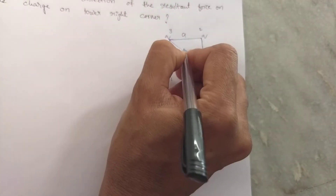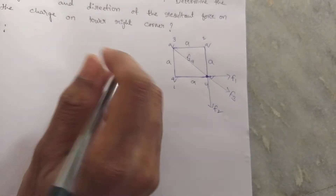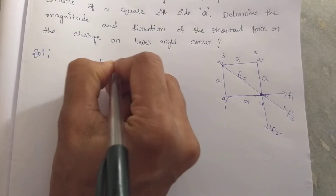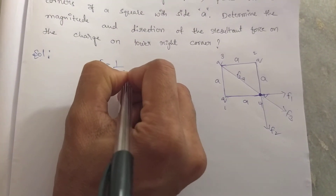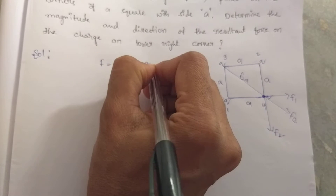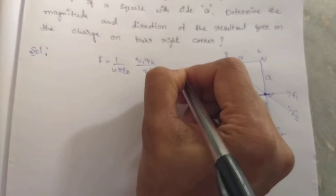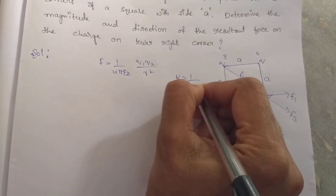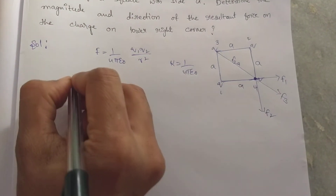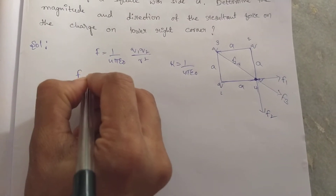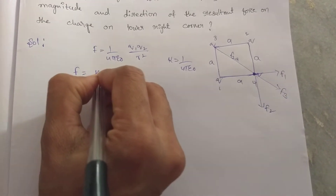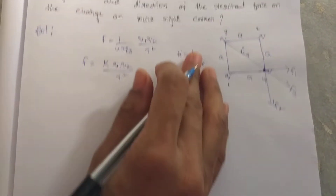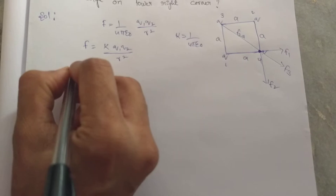So what is the diagonal distance here? Root 2A is the diagonal distance. What is Coulomb's law? 1 over 4 pi epsilon-0 times Q1 Q2 divided by R squared. I am writing K equal to 1 over 4 pi epsilon-0, then the formula becomes K times Q1 Q2 divided by R squared.